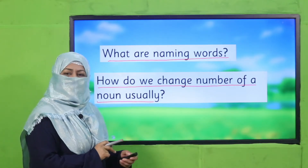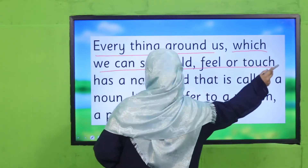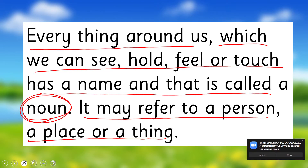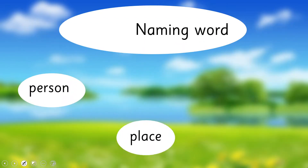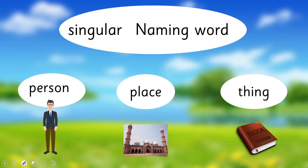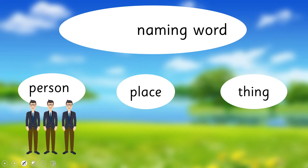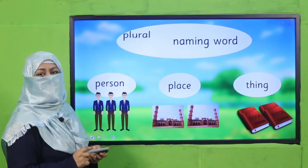My dear children, I hope you could recall that everything around us which we can see, smell, feel, or touch has a name, and that is called a noun. A noun is a naming word; it may refer to a person, a place, or a thing. When this naming word refers to one person, place, or thing, it is called a singular naming word. But if there are more than one persons, more than one places, or more than one things, the name you use for them is plural.